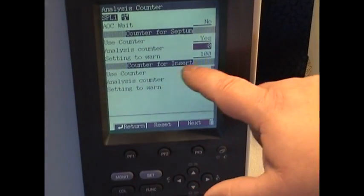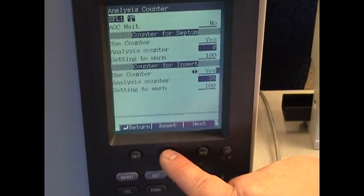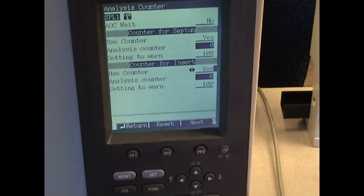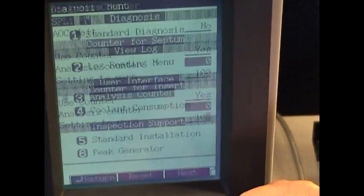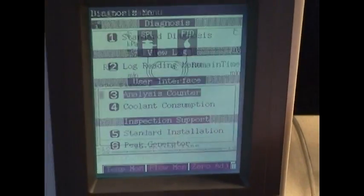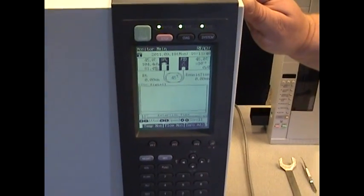Do the same thing down here for counter, insert. It says 35. I'm going to go to reset. We're at zero. I hit enter to accept everything. Now I can hit return. Monitor. And there you go. It's good for another 100 injections before you get the error again.